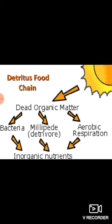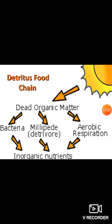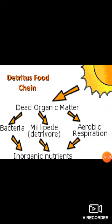This is also a food chain — a detritus food chain. The food chain that happens in decomposers is called a detritus food chain. This is also unidirectional, represented only with arrows. I am not explaining in detail because I am not going to ask any descriptive questions here.